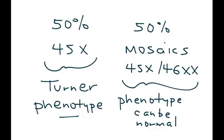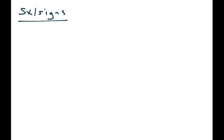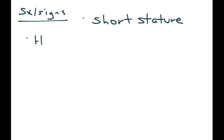So let's talk about this phenotype — what aspects are involved, the symptoms and signs. Patients with Turner Syndrome tend to have short stature. They can also have high blood pressure on physical exam, and this is due to a condition known as coarctation of the aorta.